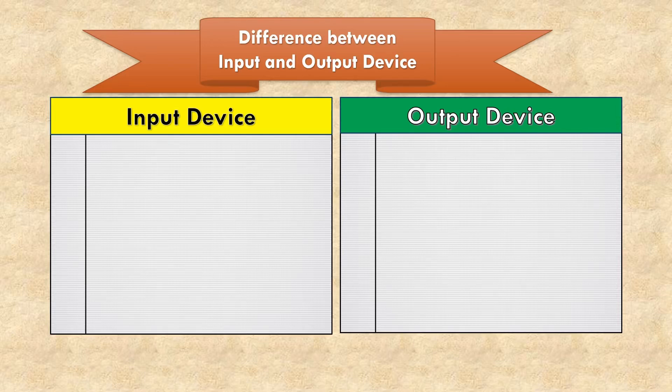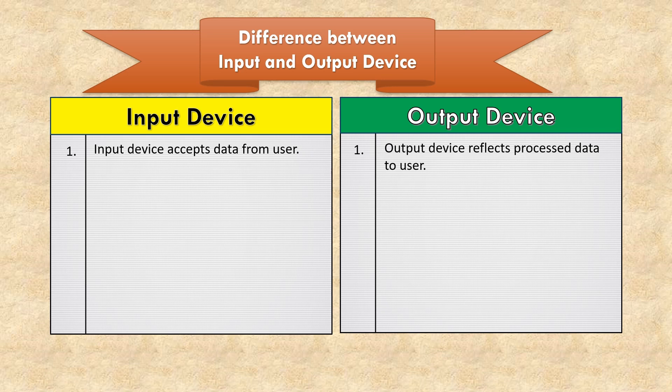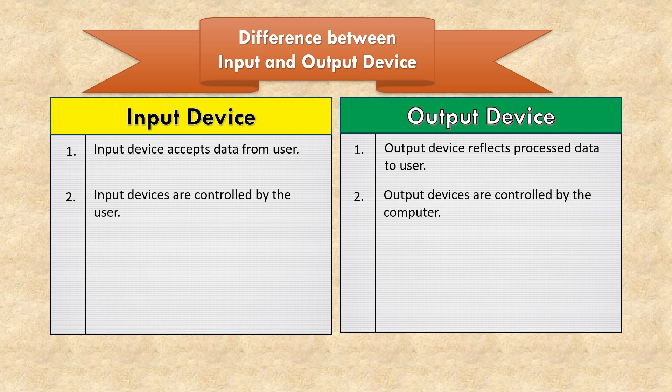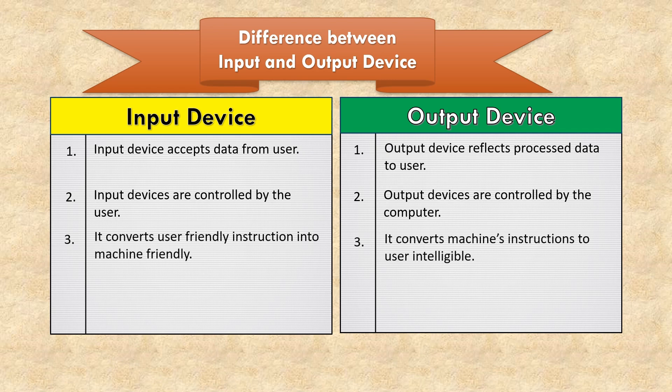Difference between input and output devices. Input device accepts data from user, but output device reflects processed data to user. Input devices are controlled by the user, while output devices are controlled by the computer. Input device converts user-friendly instructions into machine-friendly format, and output device converts machine instructions to user-intelligible format.